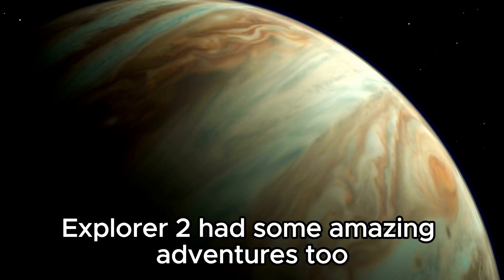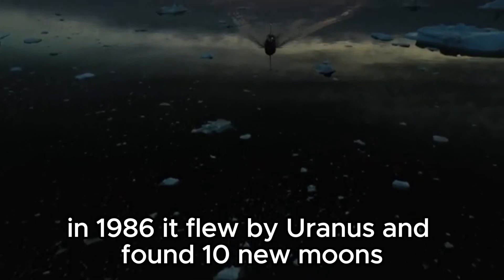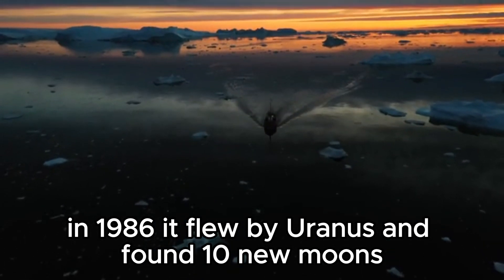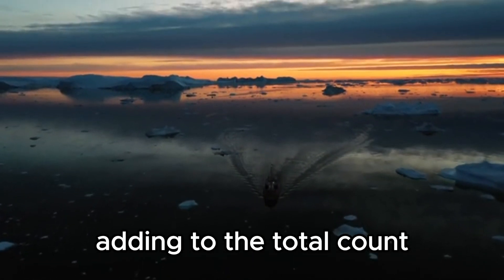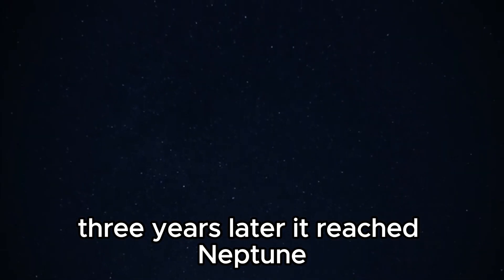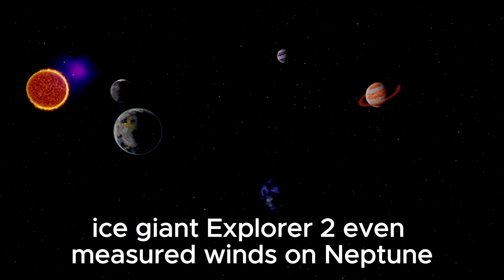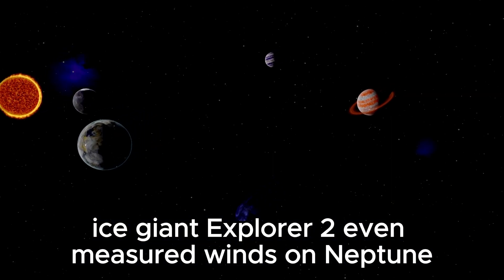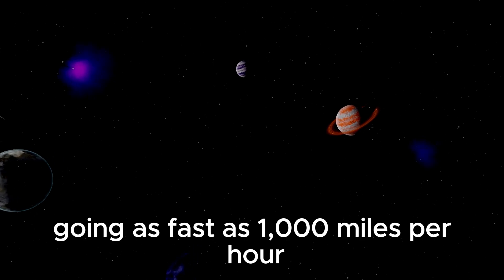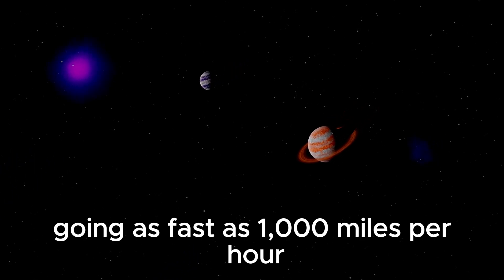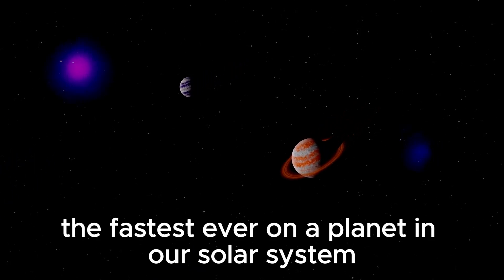On the other hand, Explorer 2 had some amazing adventures too. In 1986, it flew by Uranus and found 10 new moons, adding to the total count. Three years later, it reached Neptune, showing us the amazing things about this faraway ice giant. Explorer 2 even measured winds on Neptune going as fast as 1,000 miles per hour, the fastest ever on a planet in our solar system.